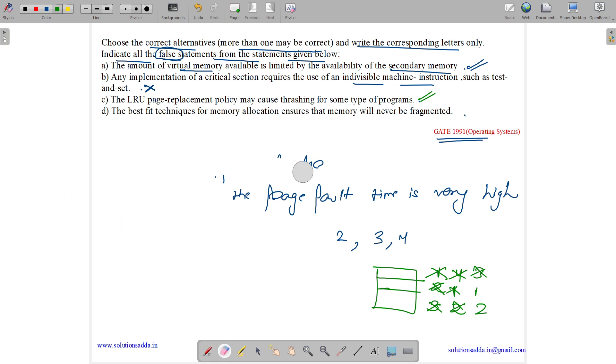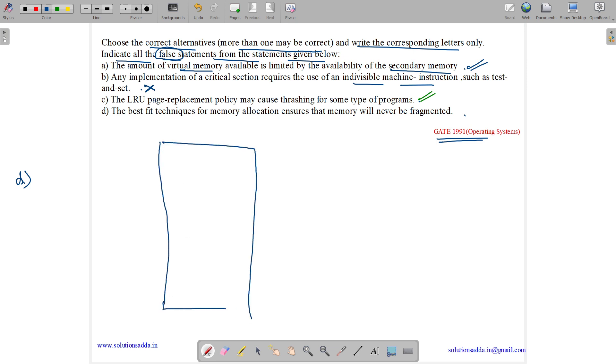Now let us see what option D is saying. So option D says the best fit techniques for memory allocation ensures that memory will never be fragmented. So what is best fit technique? Let us suppose we have a memory like this. Now we have certain partitions. Let us suppose 10 KB partition, this is 20 KB partition, this is 33 KB partition, and this is 13 KB partition. Now we have certain requests. Let us suppose we have a 10 KB request, we have a 12 KB request, then we have a 30 KB request, then we have a 40 KB request. Let us suppose 35 KB request. So what happens? So best fit means we will allot the minimum size available to a given process.